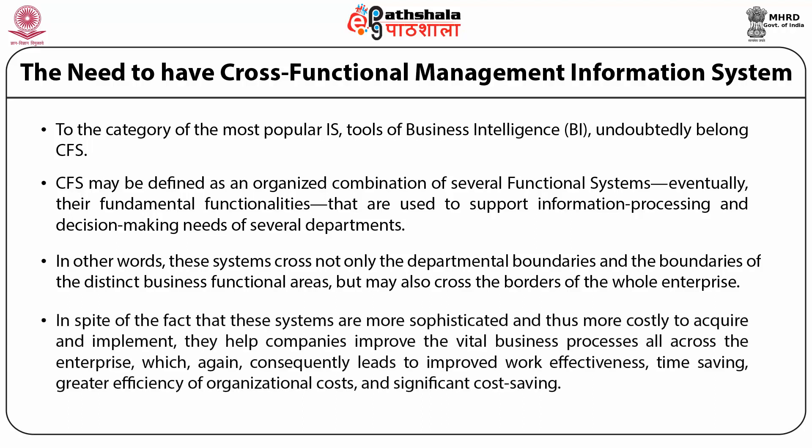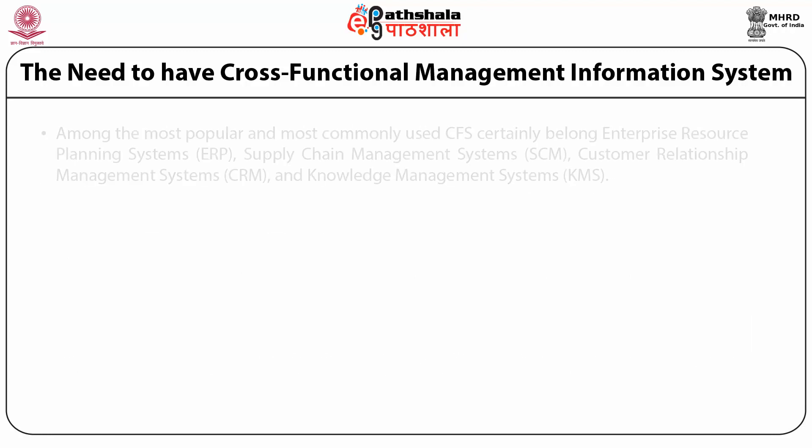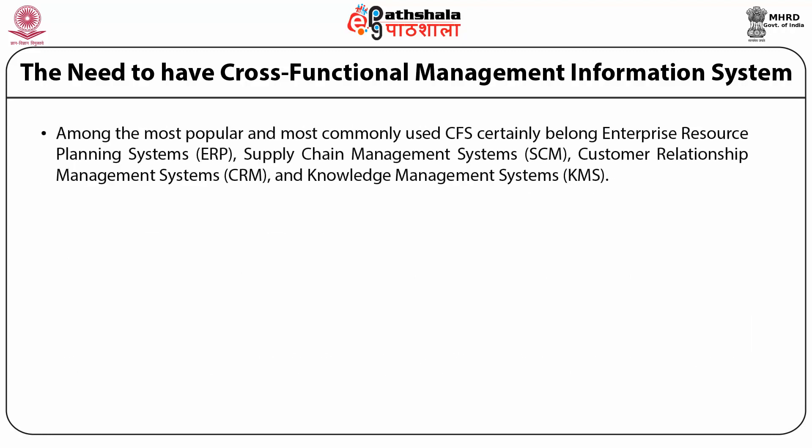In spite of the fact that these systems are more sophisticated and thus more costly to acquire and implement, they help companies to improve vital business processes all across the enterprise, which consequently leads to improved work effectiveness, time saving, greater efficiency of organization, and significant cost saving. Among the most popular and commonly used cross-functional systems certainly belong enterprise resource planning systems, supply chain management systems, customer relationship management systems, and knowledge management systems.